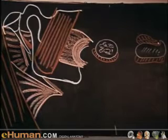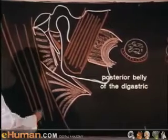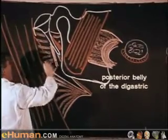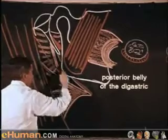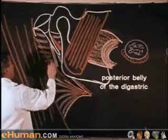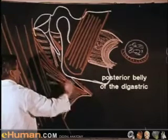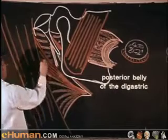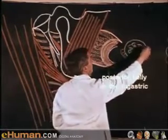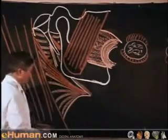On the medial surface of the mastoid process is the posterior belly of the digastric, attached to the inner surface of the mastoid process and sweeping down to its intermediate tendon. Here is the anterior border of the sternocleidomastoid and the posterior belly of the digastric going down to its intermediate tendon, attached to the medial surface of the mastoid process.